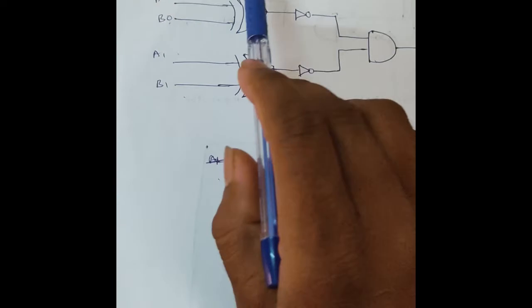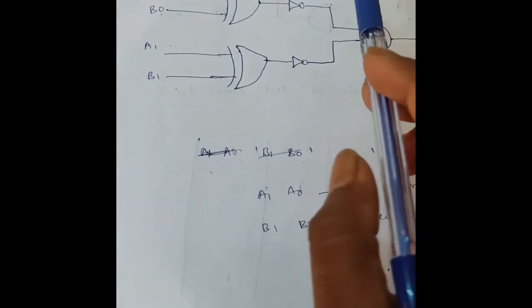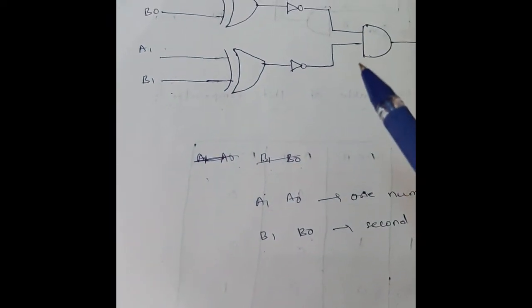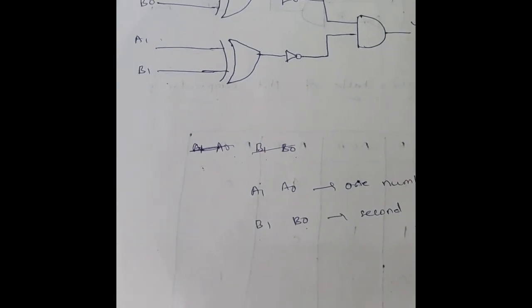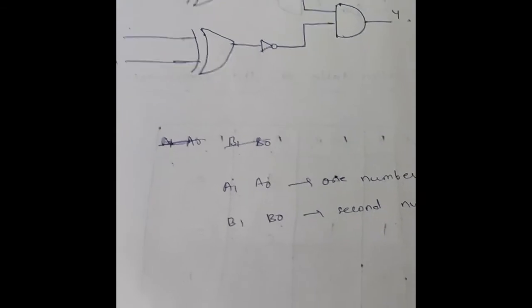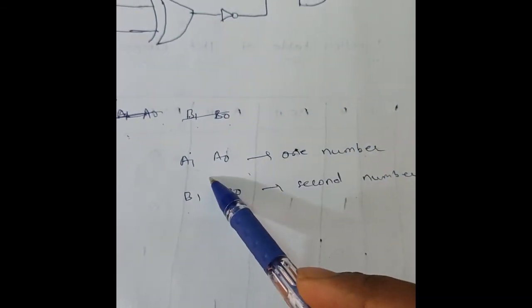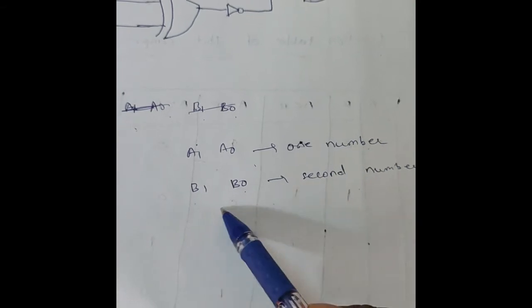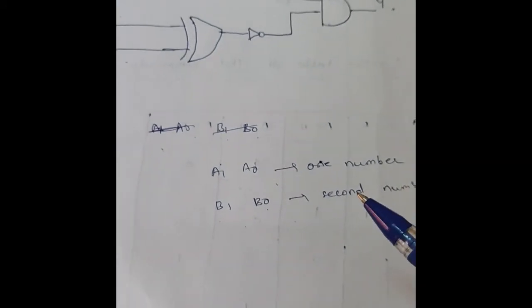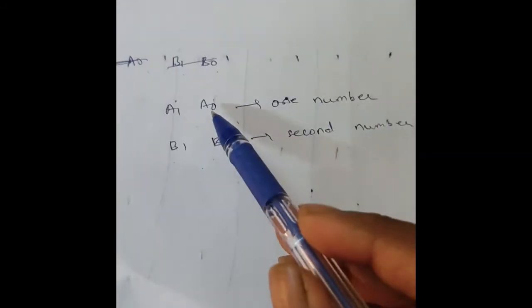Hi students, today's experiment is the 2-bit comparator circuit. It is used to compare the magnitude of the 2 bits of 2 numbers. Here A0 and A1 is one number, B0 and B1 is the second number. This comparator is used to compare the magnitude of the 2 bits of the 2 numbers.